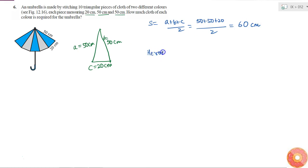Area of one piece of cloth is equal to square root over S into S-A into S-B into S-C.